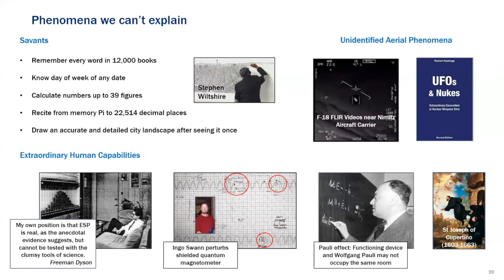There was the Pauli effect, right? Wolfgang Pauli. He had a huge reputation. Anytime he, they kept him away from the experiments because anytime he entered the lab, the experiment would stop working. That's the Pauli effect. So Wolfgang Pauli may not be occupied. The same room is an experiment functioning device. He'd blow out lights too. Yeah. He'd blow out lights as well.